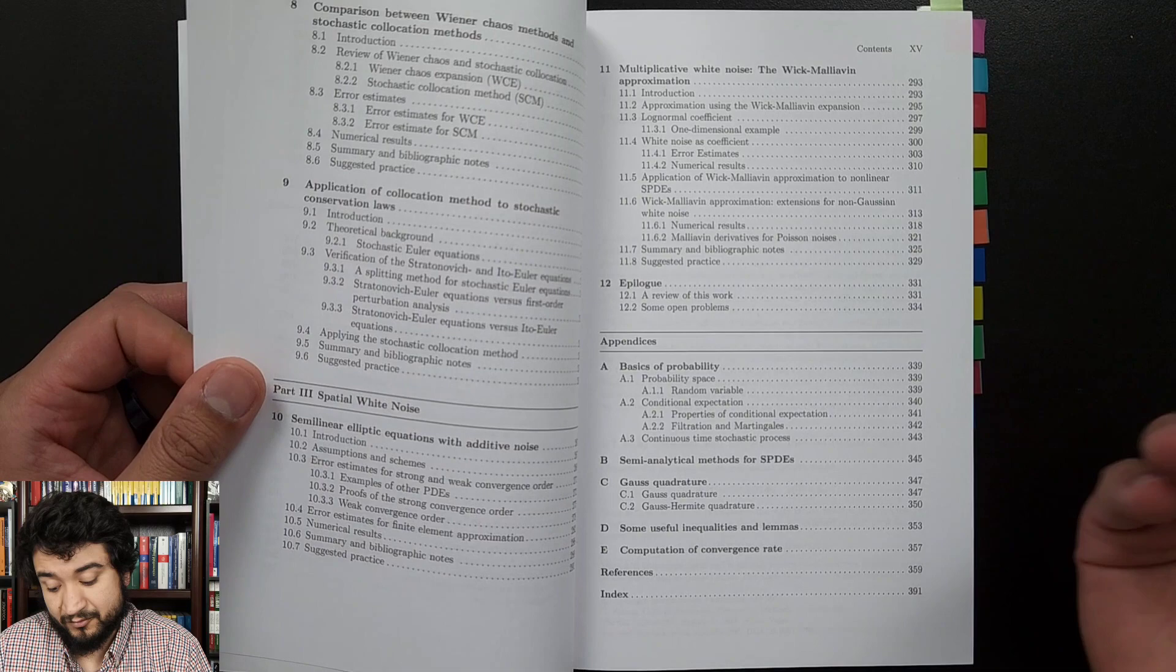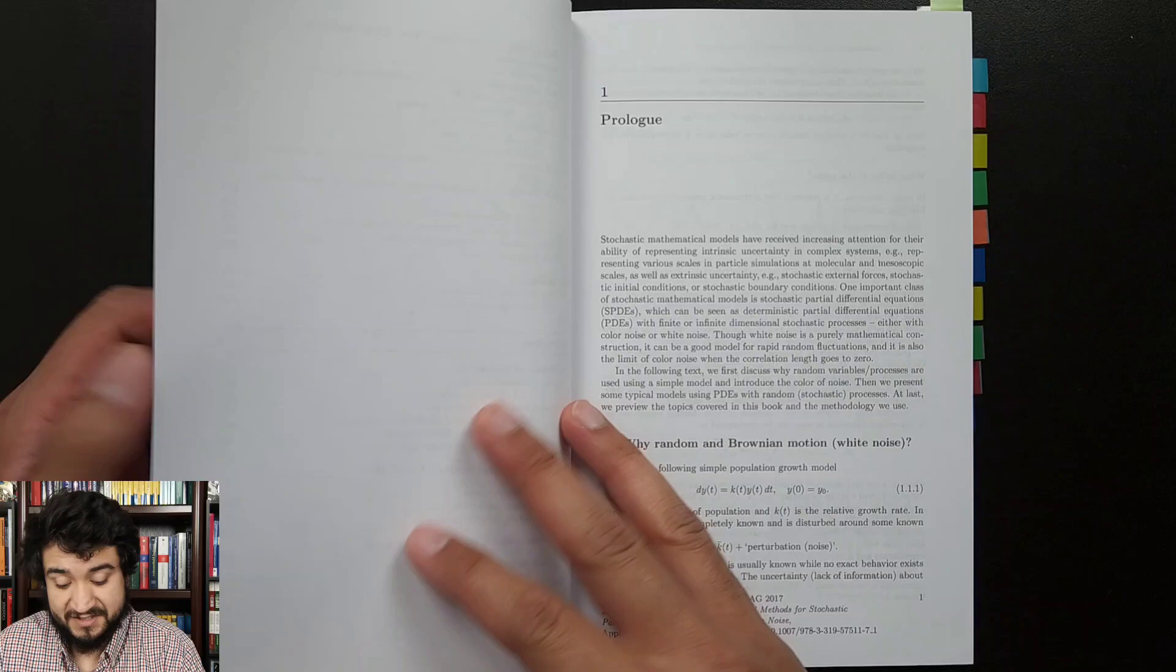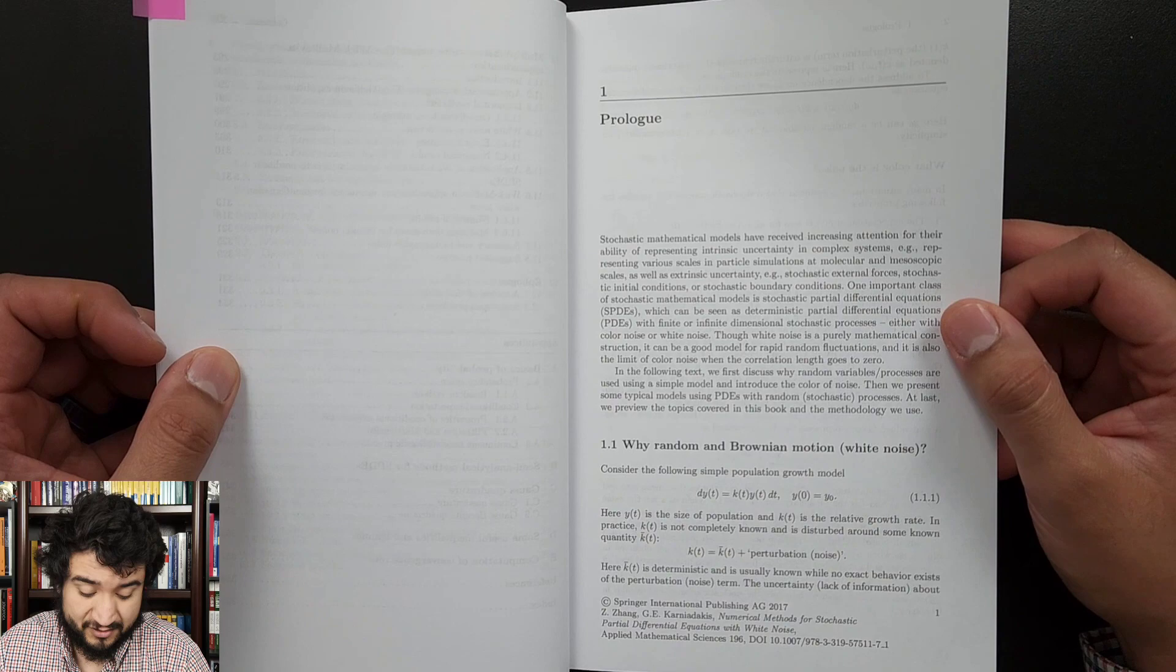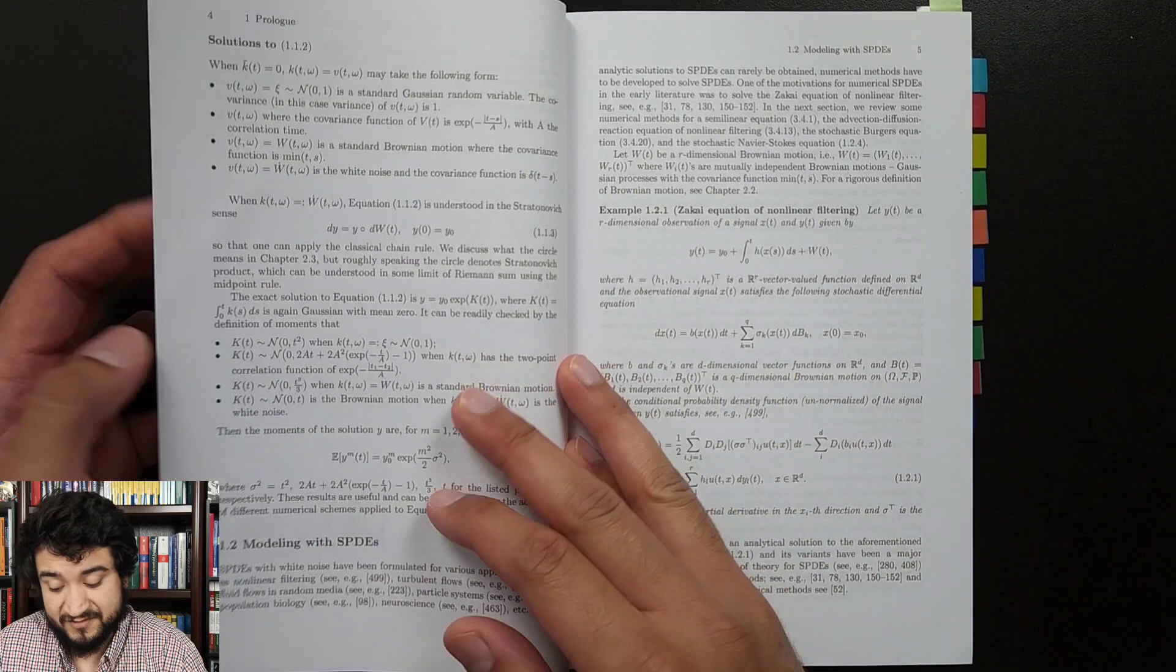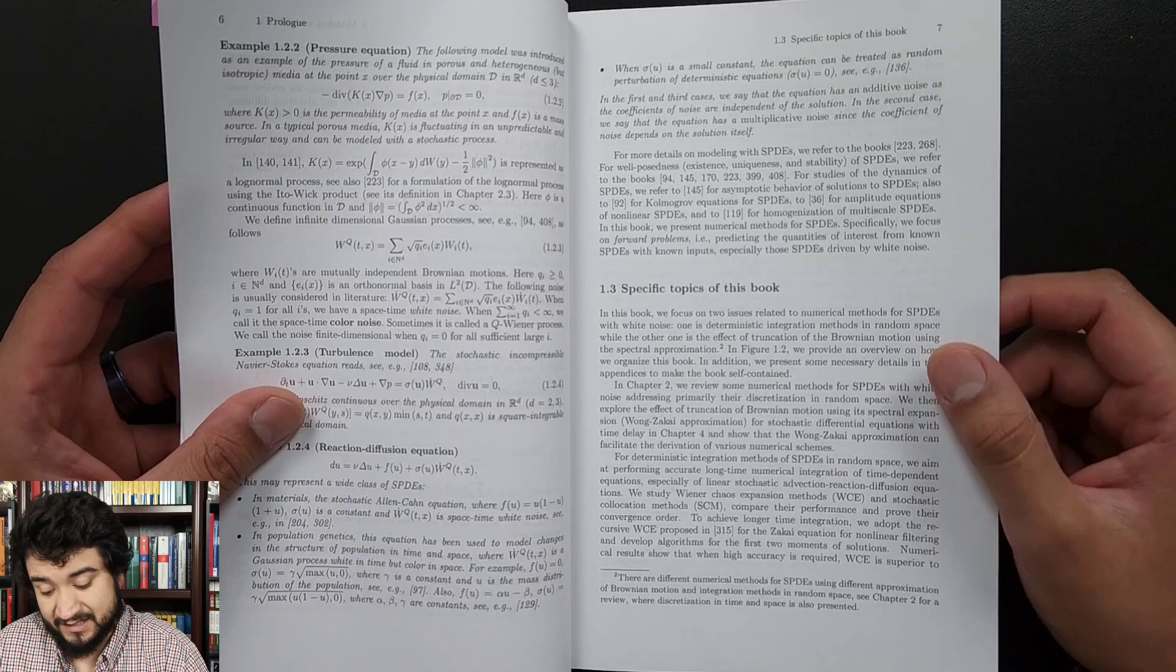Chapter one starts off with a growth model and then gives you an idea of what noise is, different types of noise, some solutions, and then models—kind of just giving you a general idea of SPDEs and the types of problems it can apply to. This is what I was telling you: how the first three chapters pretty much open the rest of the book up to the reader.